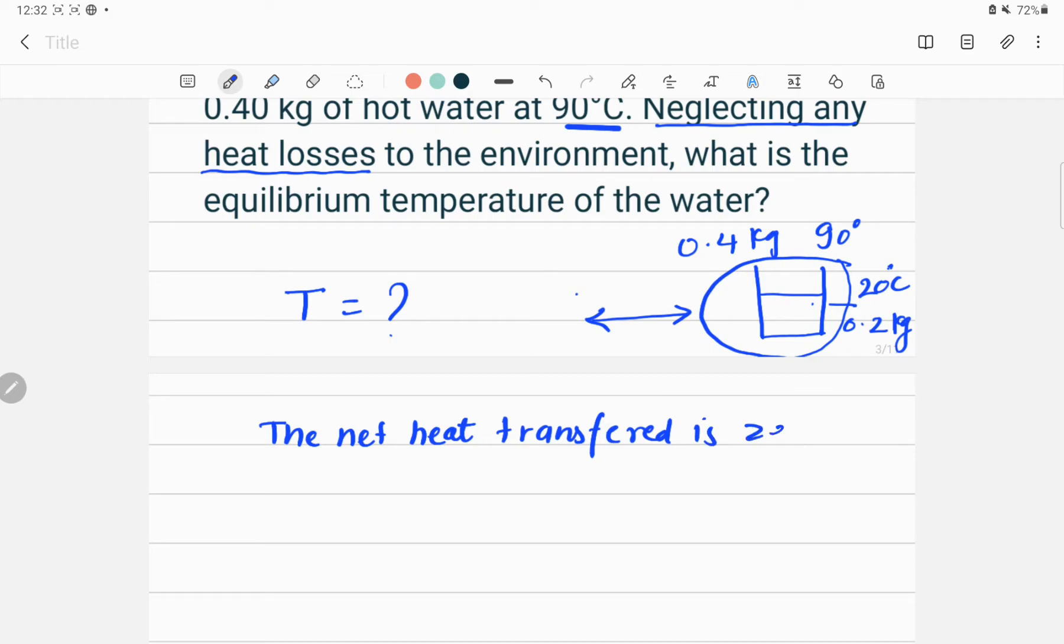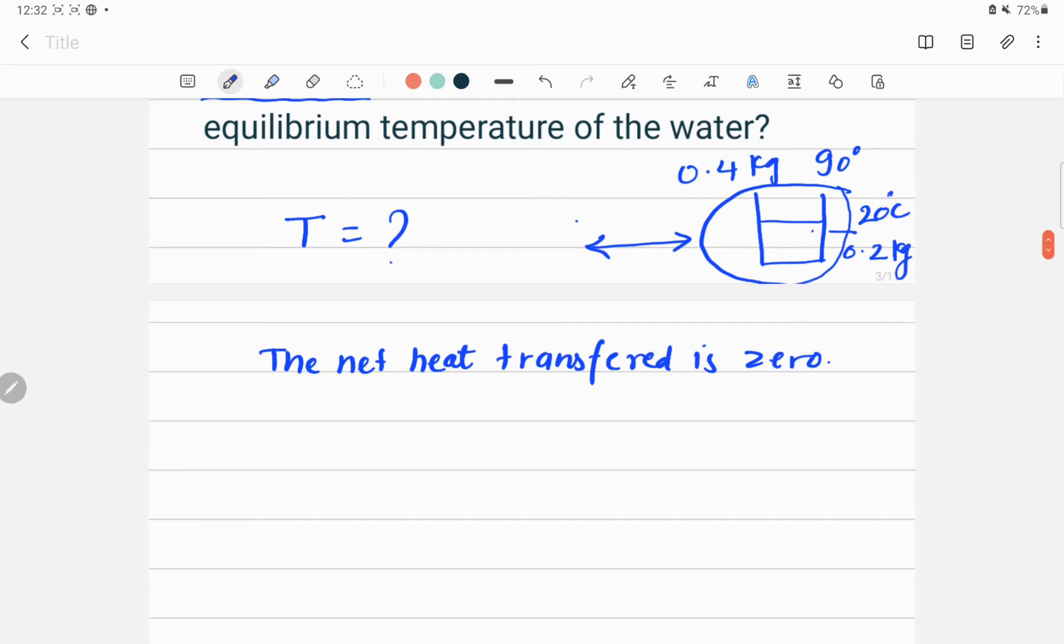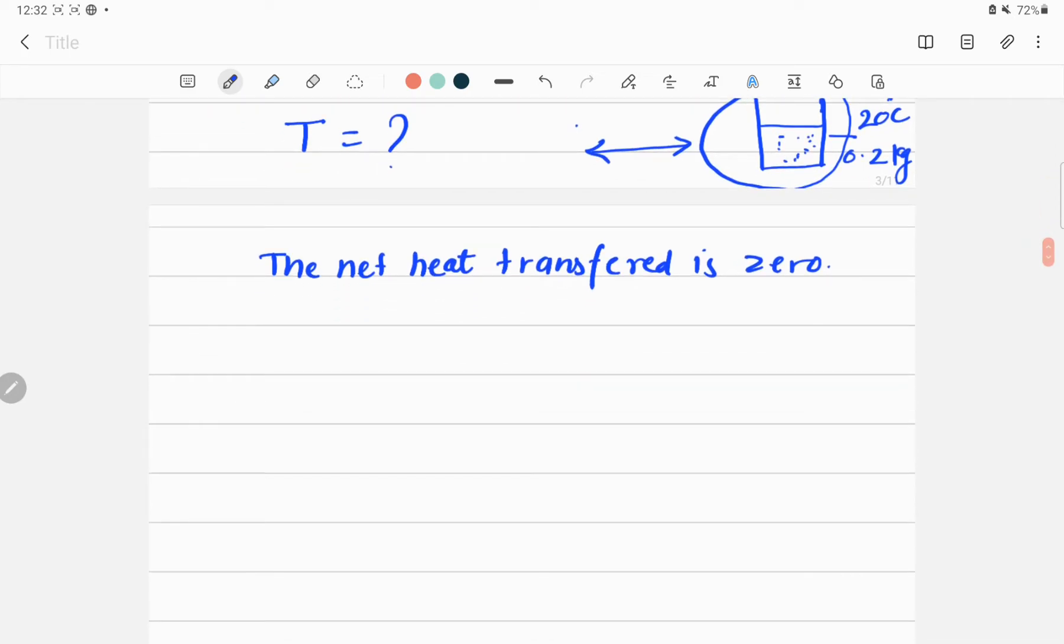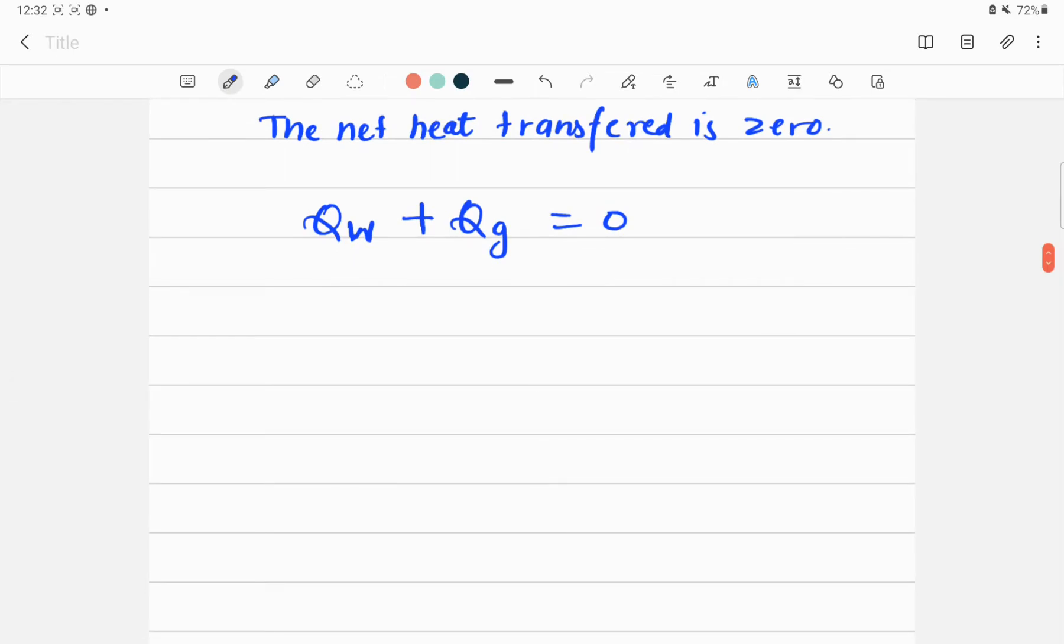So this is the principle of calorimetry. If T is the final temperature of this system, this water and your glass, then we can write down the amount of heat transferred from the water, possessed by water is Qw, which is amount of heat of water, and amount of heat of glass is Qg. So this sum should be zero because heat is not transferring from this system to the environment.